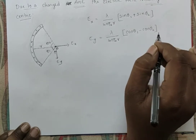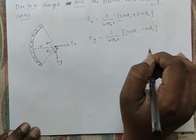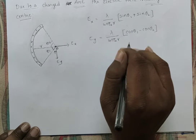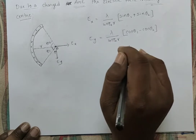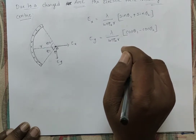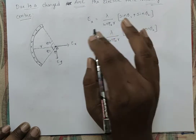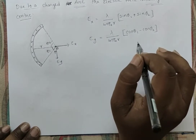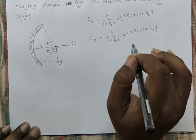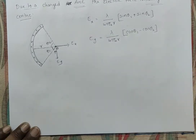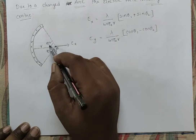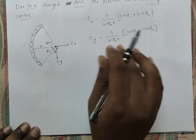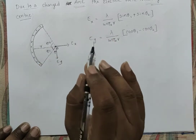Based on this, if it is a semi-circle, we can find the electric field intensity at its center. If theta1 and theta2 are equal, we can also find what the electric field intensity is.